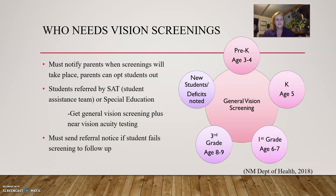Who needs a screening? In New Mexico, we do a general vision screening on pre-K students ages 3 and 4, kindergarten age 5, first grade ages 6 and 7, third grade ages 8 and 9, and on new students or anyone with a deficit noted. We must notify parents when screenings will take place so they can opt their child out. Students referred by SAT teams or special education teachers get a general vision screening along with a near vision screening. We must send a referral notice if a student fails a screening follow-up.